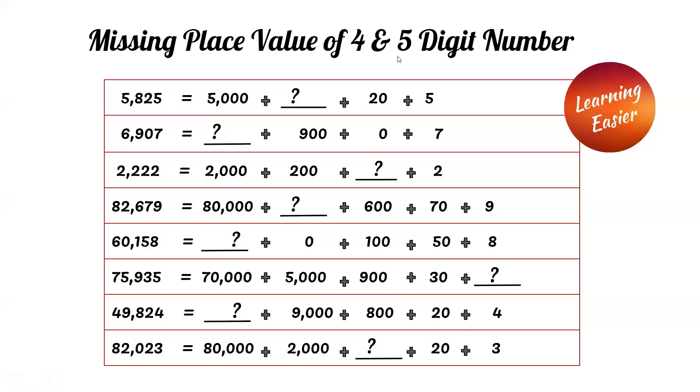Missing place value of four and five digit numbers. 5,825 equals 5,000 plus something plus 20 plus 5. The eight in the hundreds place has a value of 800, so 800 is the answer.